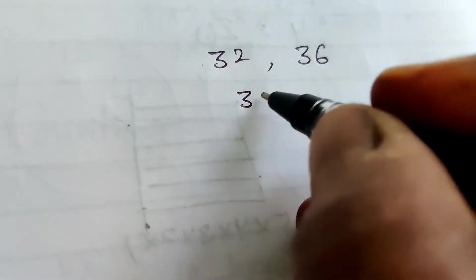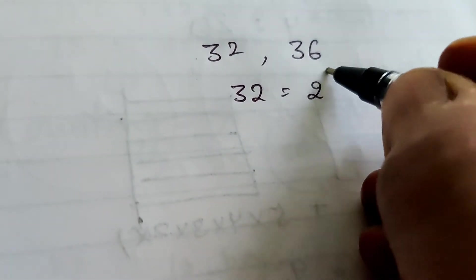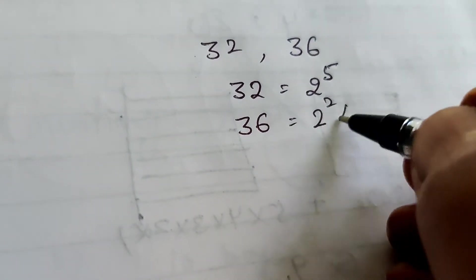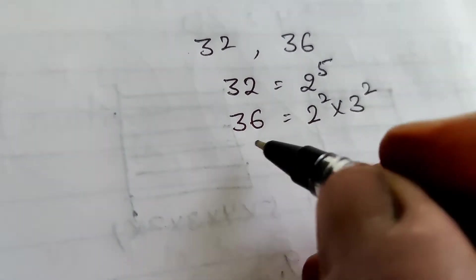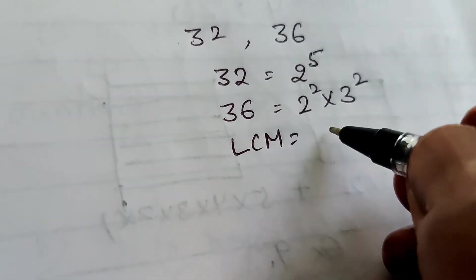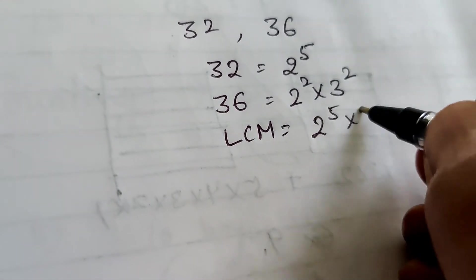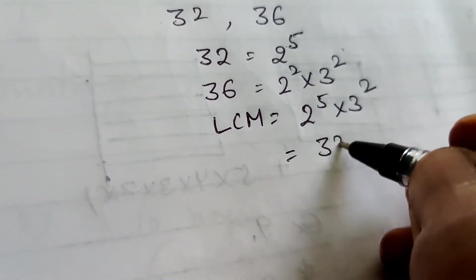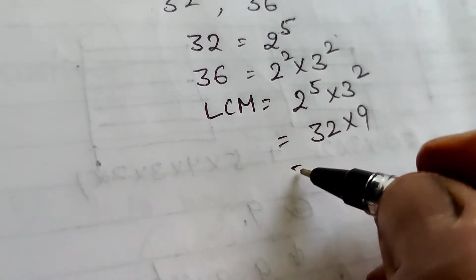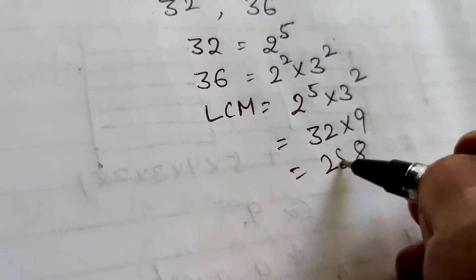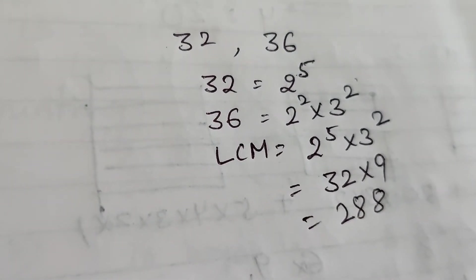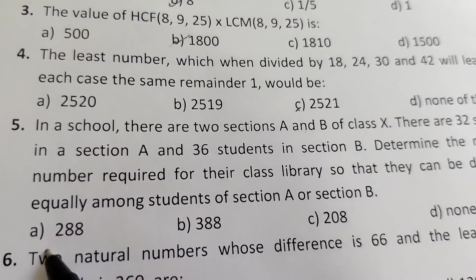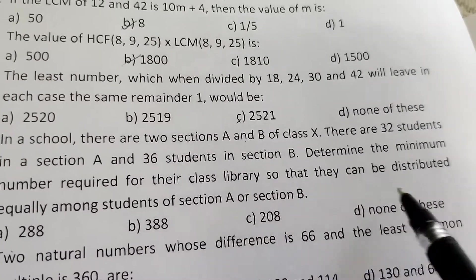32 = 2⁵ and 36 = 2² × 3². The LCM = 2⁵ × 3² = 32 × 9 = 288. The answer is 288.